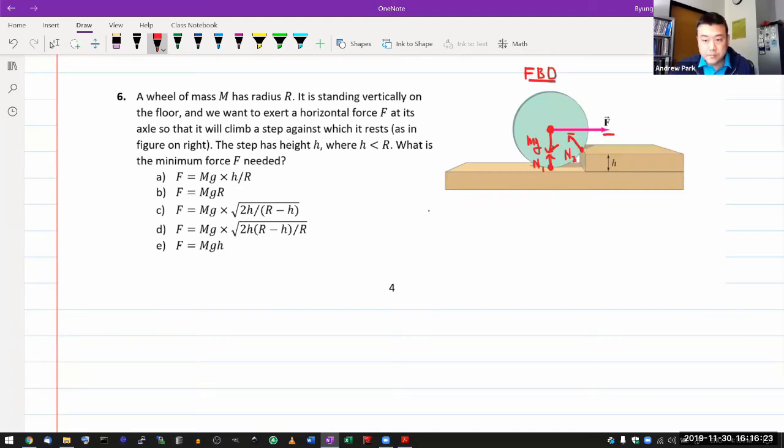Now, this is what I want you to imagine. As you apply this force, the moment before the wheel goes over, what would happen with this bottom normal force? It would go to zero because it's about to lose contact. So for the situation that we are interested in, this particular normal force will go away and we will still have this normal force remaining.